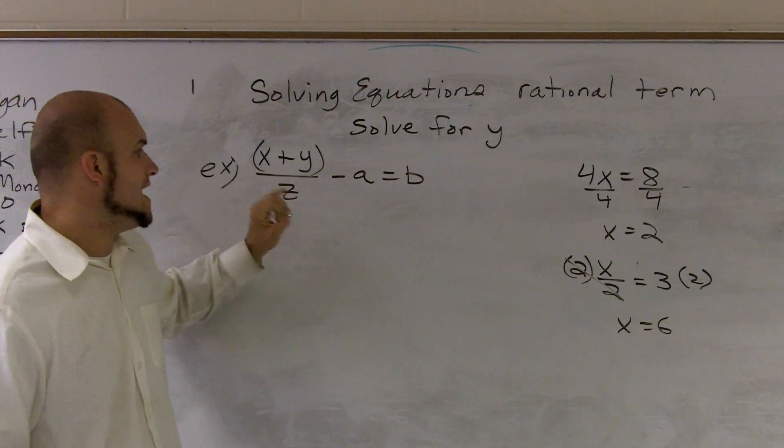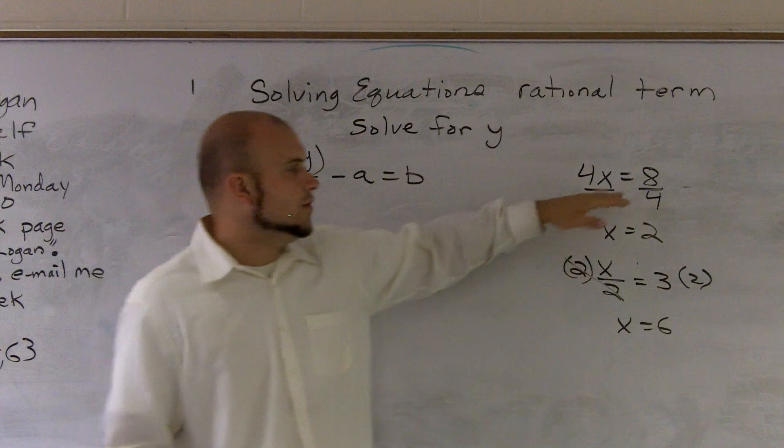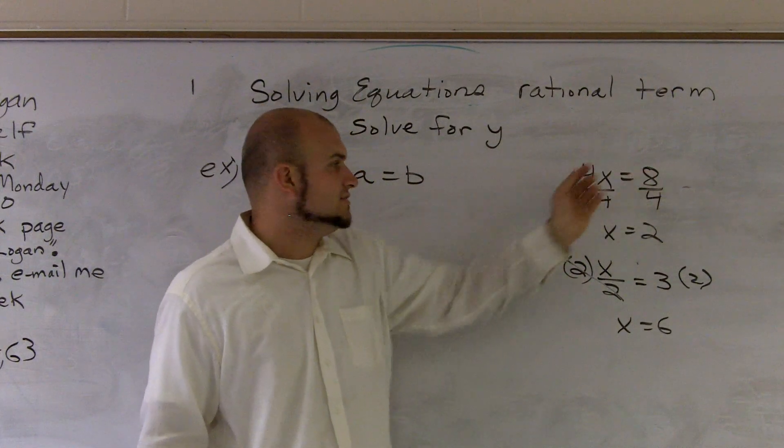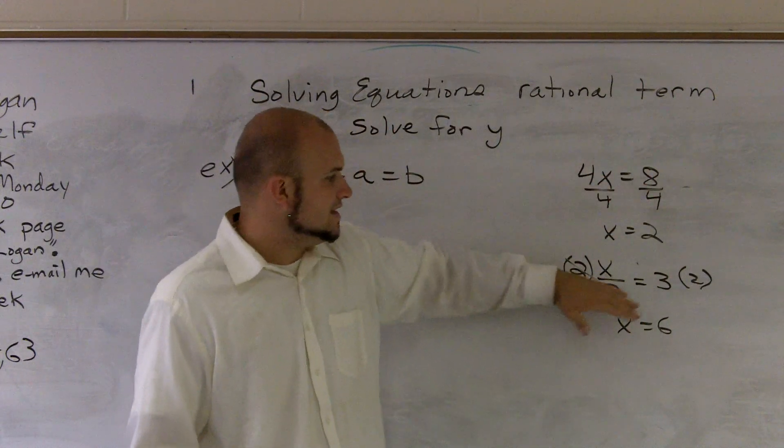A big problem we have is people who have to solve for y, but people do not know what to do with that z. We know in a problem like this, when you have 4x equals 8, you divide by 4 because 4 is multiplied by the x, so the inverse operation would be division.